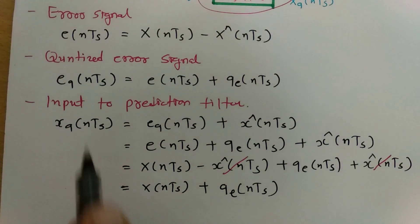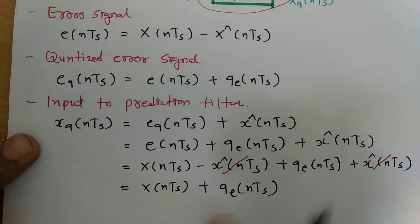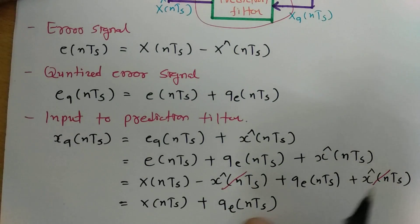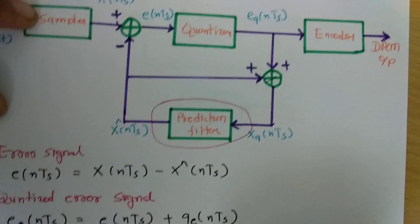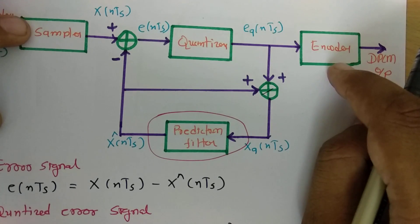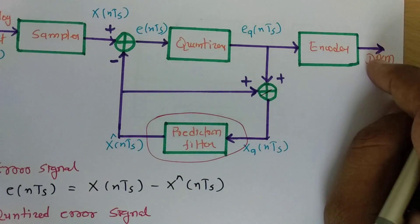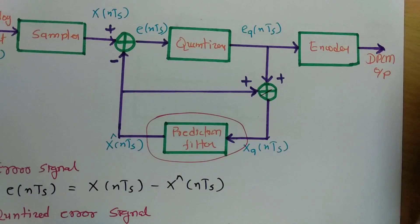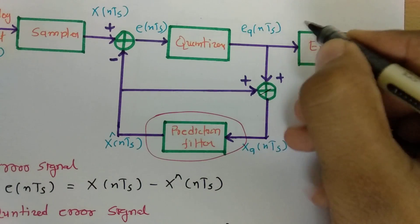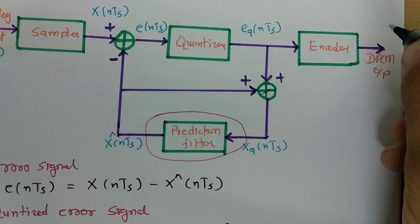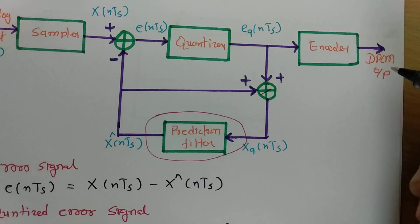At the end, we generate the quantized error signal EQ(NTs). This quantized error signal is given to the encoder, which converts it into digital data — the differential pulse code modulated output.